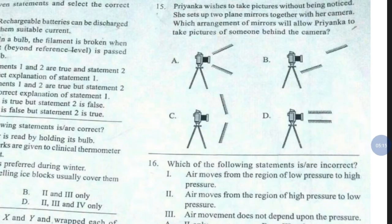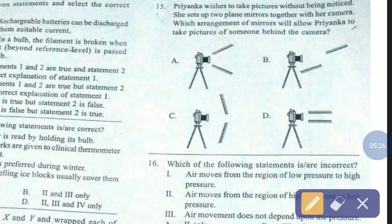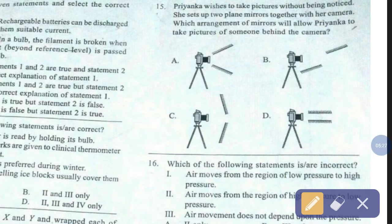Question number 15. Priyanka wishes to take pictures without being noticed. She sets up two plane mirrors together with her camera. Which arrangement of mirrors will allow Priyanka to take pictures of someone behind the camera? The correct answer is option number C.